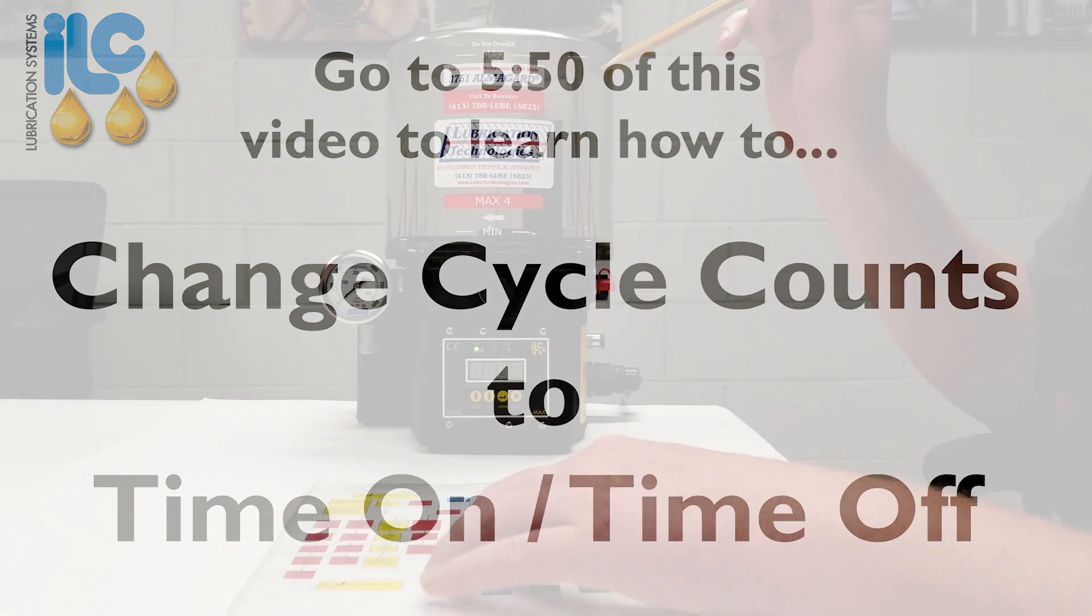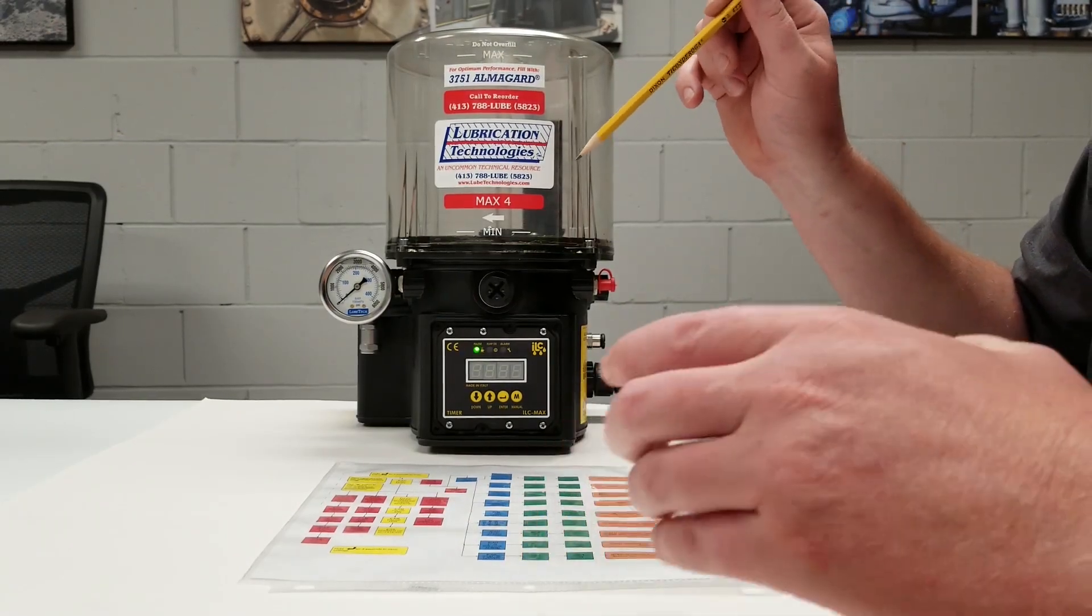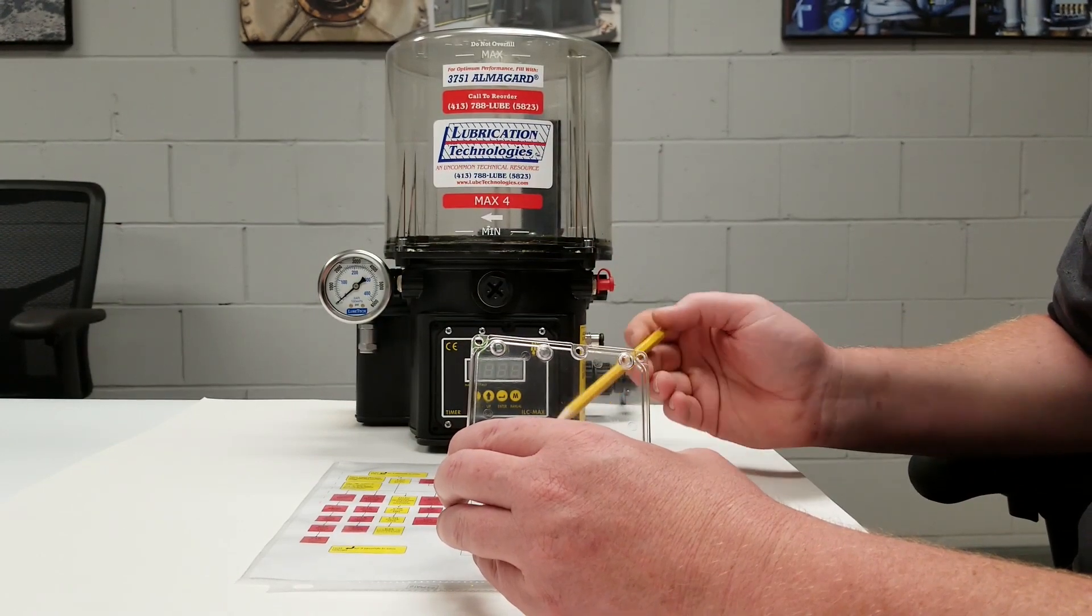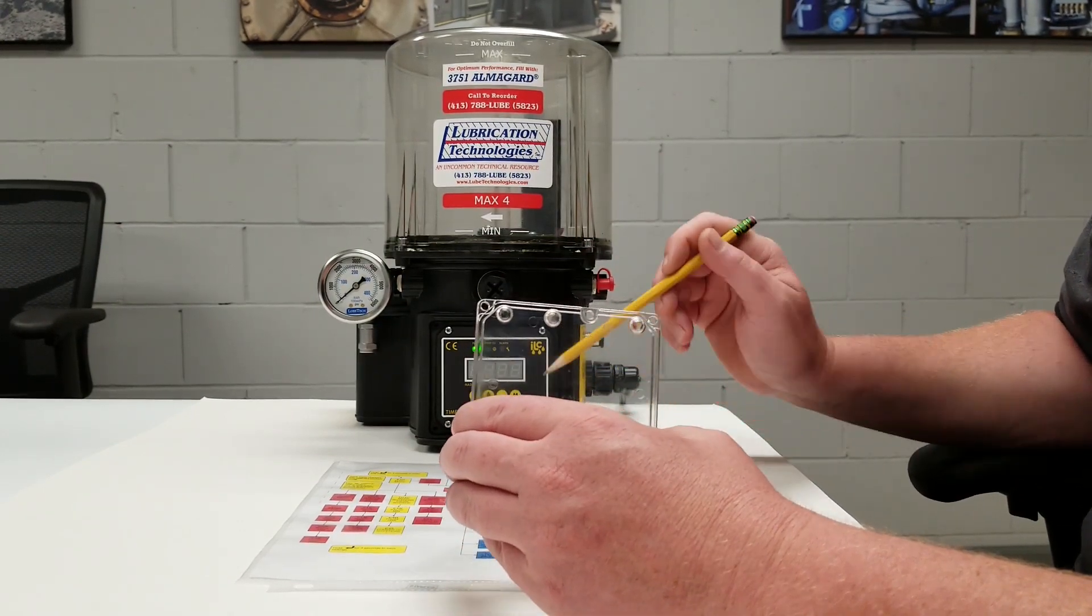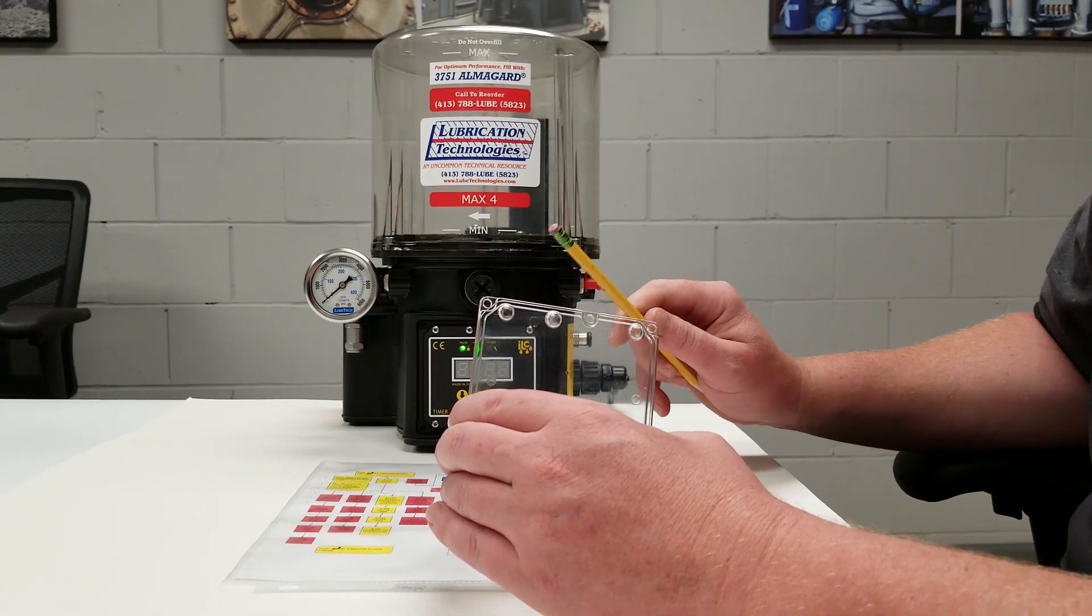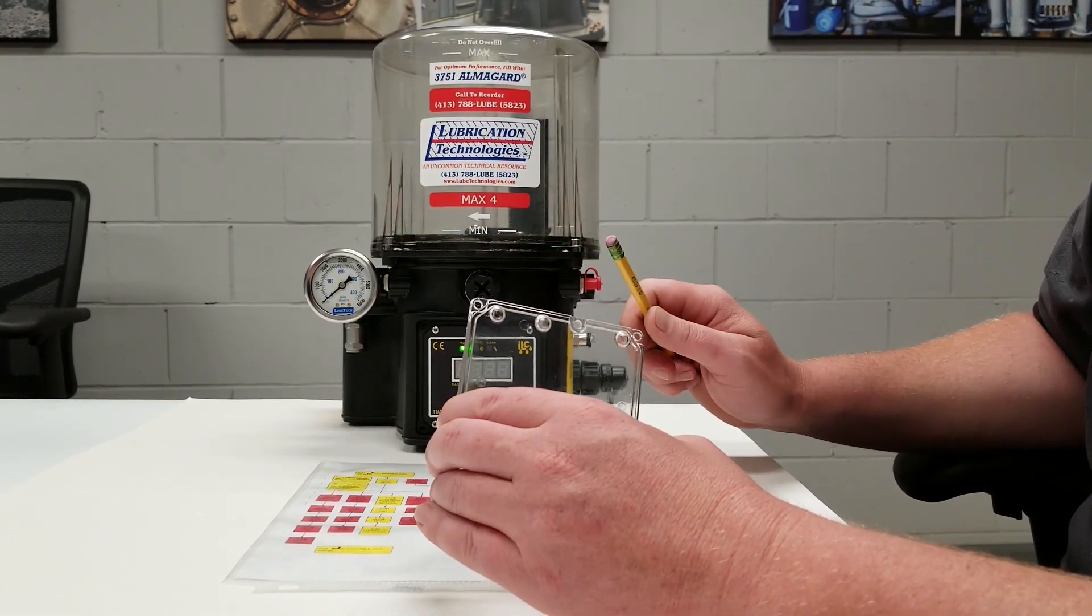Lastly I want to mention once you have changed your cycle time, it is very important to put the plastic screen back on. This helps prevent any water from getting in the timer and anybody from accidentally hitting any buttons or changing the cycle time.